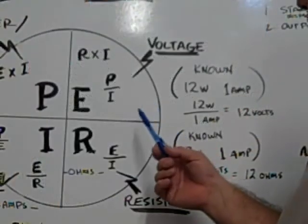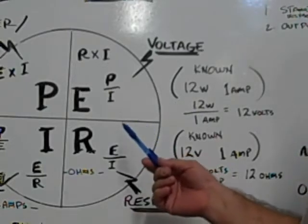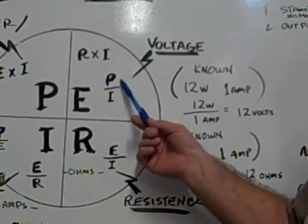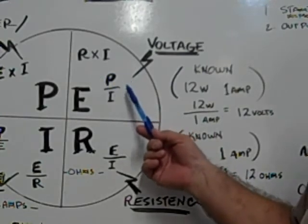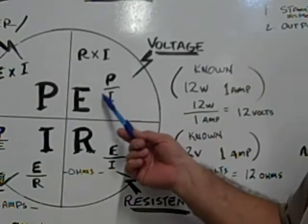So you want to find out what the voltage of a bulb is. The known quantities are P for wattage or power, and the other known is amperage, indicated by the I.